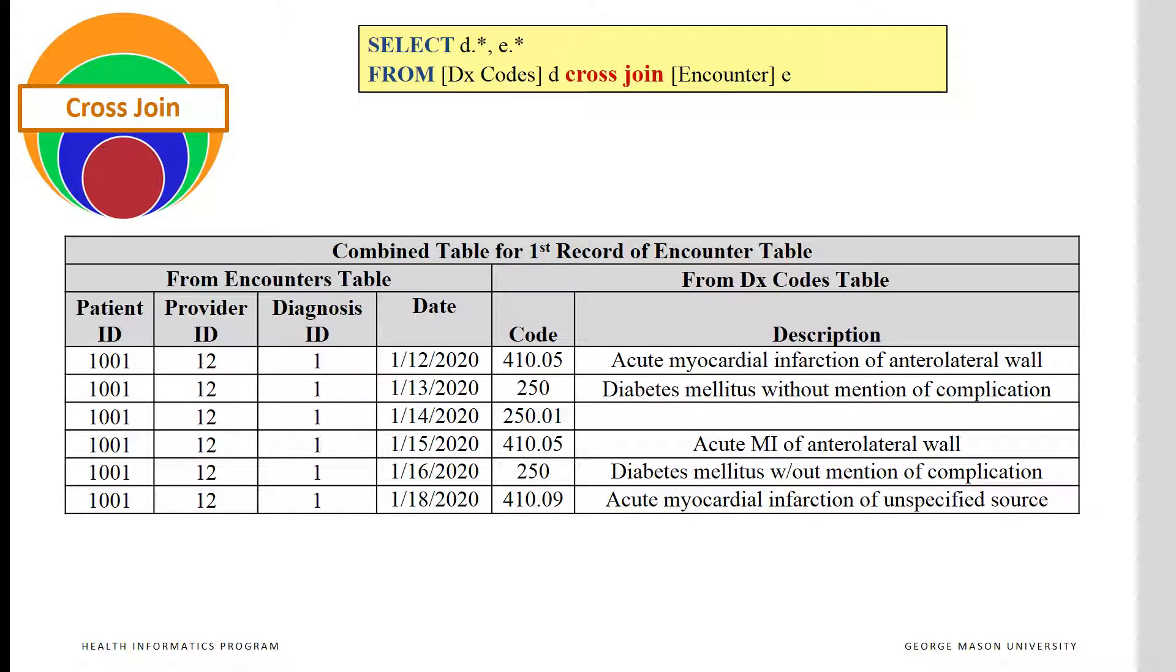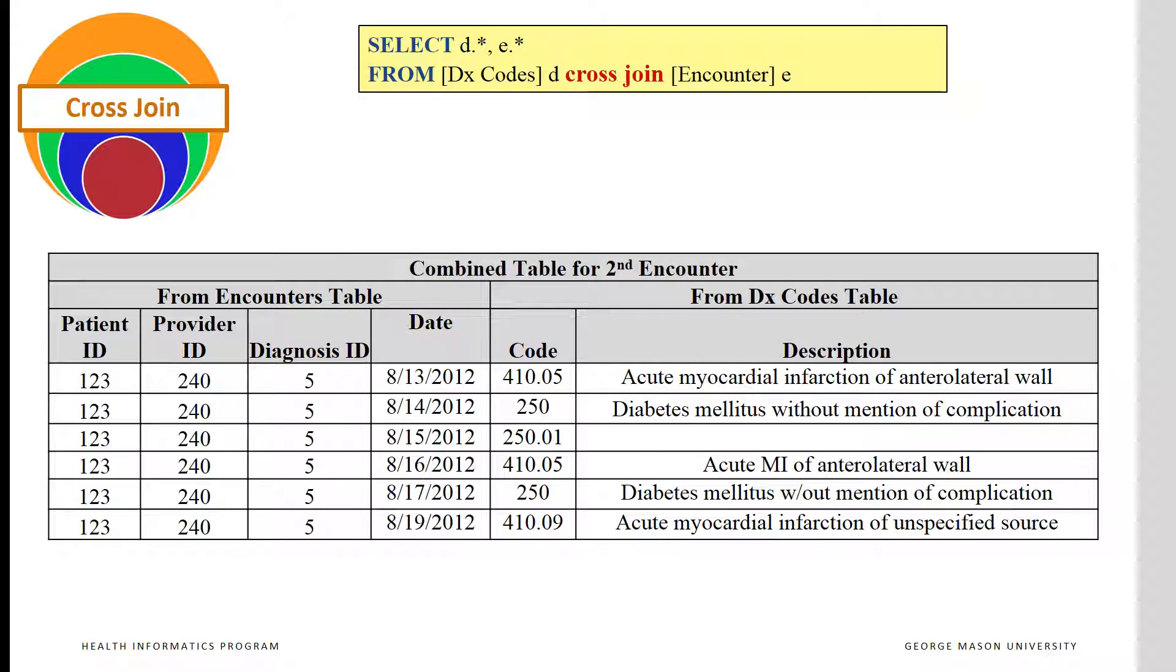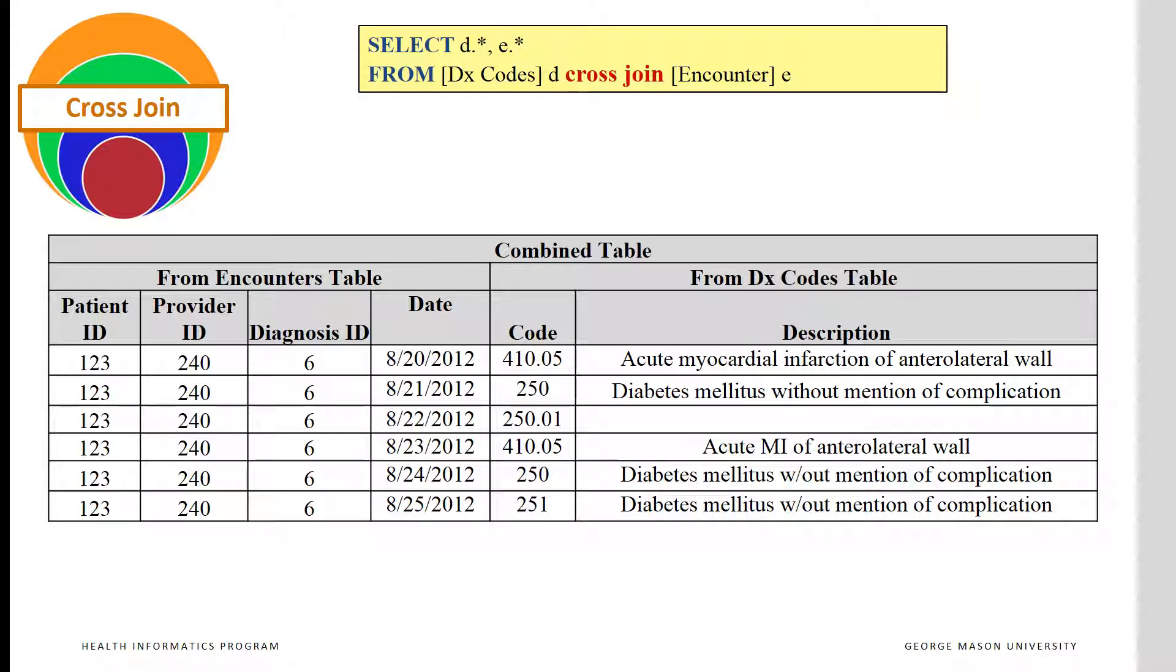The combined table for just the first record of the encounter table will include all six descriptions. The combined table for the second record of the encounter will also include all six descriptions. The combined table for the third encounter will also include six records, each having a different description.